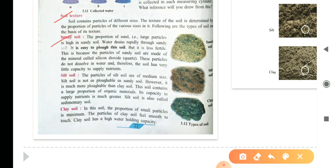Sandy soil. The proportion of the sand that is large particles is high in the sandy soil. Water drains rapidly through the sandy soil. It is easy to plough this soil but it is less fertile. This is because the particles of sandy soil are made up of a mineral called silicon dioxide i.e. quartz. These particles do not dissolve in the water and therefore the soil has very little capacity to supply nutrients.